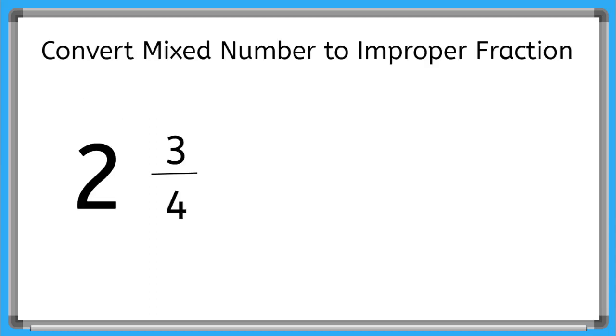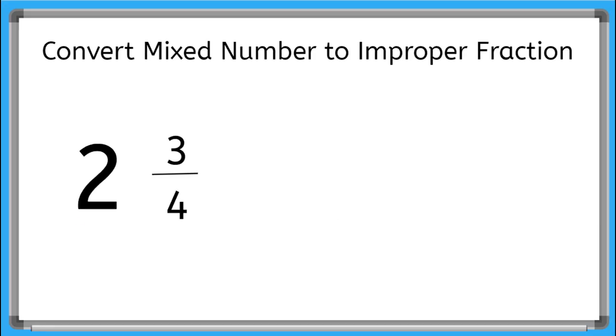To convert mixed numbers to improper fractions, there are a few steps. The first step is we take our whole number 2 and we multiply it by our denominator here, which is 4. So that gives us 8.